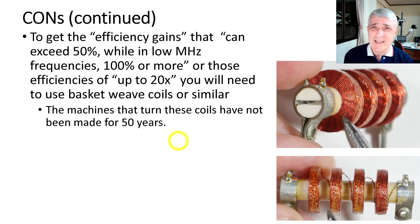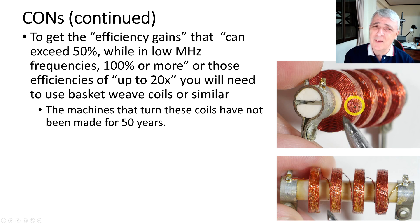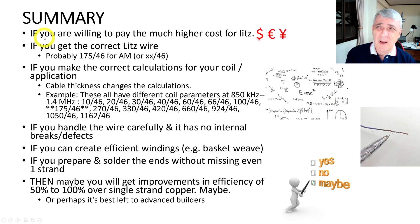To actually get those efficiency gains exceeding 50 percent, you need to use a basket coil weave, which looks like this — and that's almost impossible to do by hand. The problem is that the machines that make these haven't been manufactured in about 50 years. I found one on the internet that looked like it had been run over by a steamroller, priced at $125. So that's basically not an option.